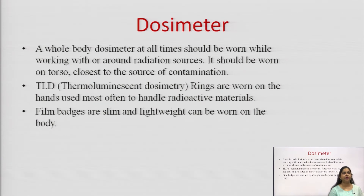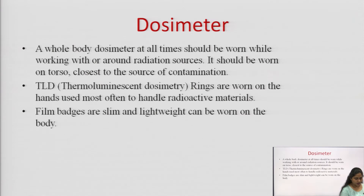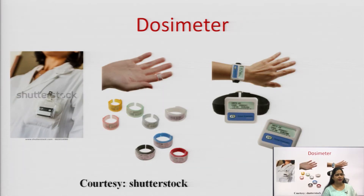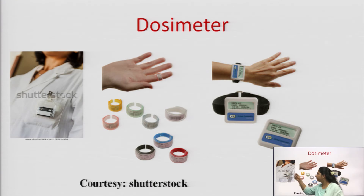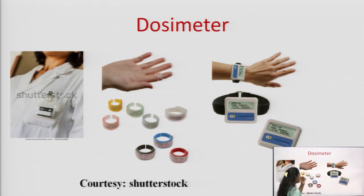Dosimeters help control a person's exposure when working with radioactive compounds. For example, if the permissible limit is crossed — say a person has been continuously working with radioactive compounds for two or three days — they can be given an interval or break of a few days before returning to work. These images show different types of dosimeters: a film badge worn on the torso, a thermoluminescent dosimeter worn as a ring on the finger, and a wristband type. These dosimeters report the exposure, the limit of exposure, and the dose of the exposed radiation.